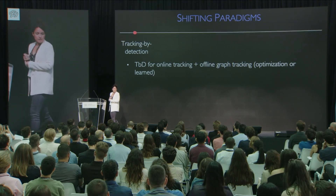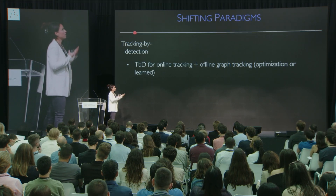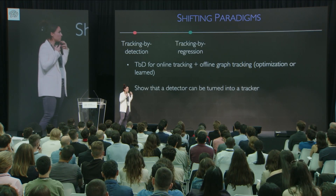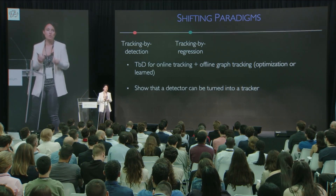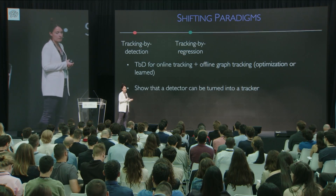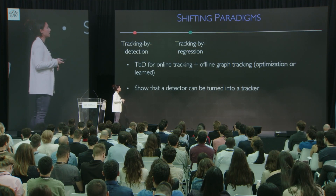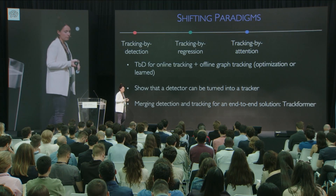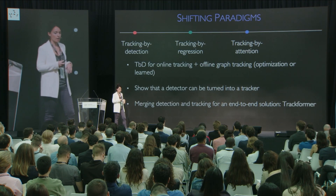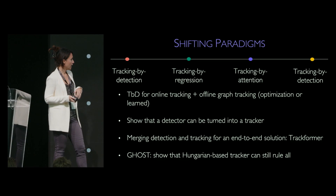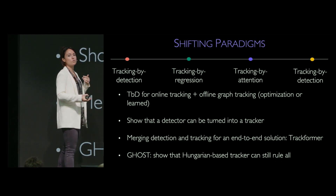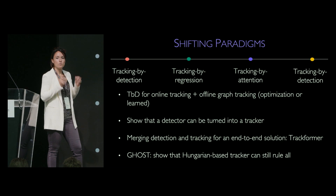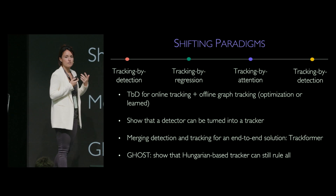To summarize: I started with tracking by detection — online tracking and online graph tracking with more complex optimization, but always with dependence on detection. We showed how to turn a detector into a tracker, combining both tasks. We showed how to further merge detection and tracking with an end-to-end solution based on transformers, where we didn't need any extra tricks to deal with tracking challenges. And finally, we showed that sometimes it's better to go back to the basics — create a really simple tracker that, with just a few details, can still be state-of-the-art.